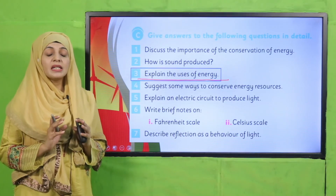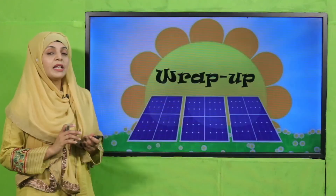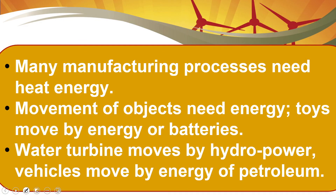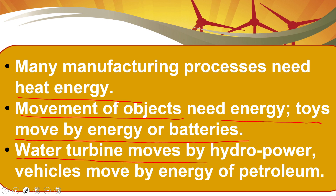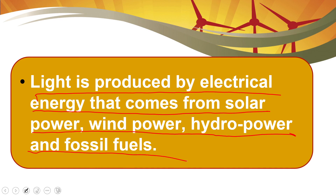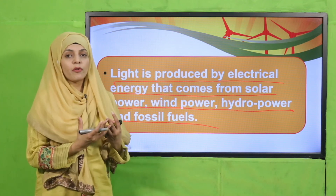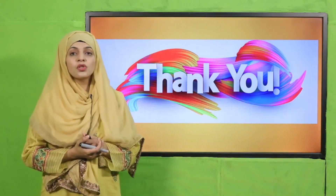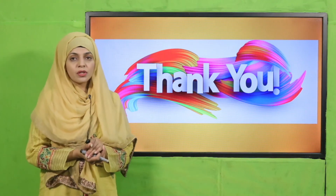Let's quickly look at the wrap-up. Aaj ki class mein humne kya learn kiya? Many manufacturing processes need heat energy. Movement of objects needs energy — toys move by energy of batteries, water turbines move by hydro power, vehicles move by energy of petroleum. Light is produced by electrical energy that comes from solar power, wind power, hydro power, and fossil fuels. Aaj humne dekha ke energy kin kin kamon ke liye use hoti hai. I hope you have enjoyed today's lecture. Keep everybody around you safe. Have a good day, thank you so much.